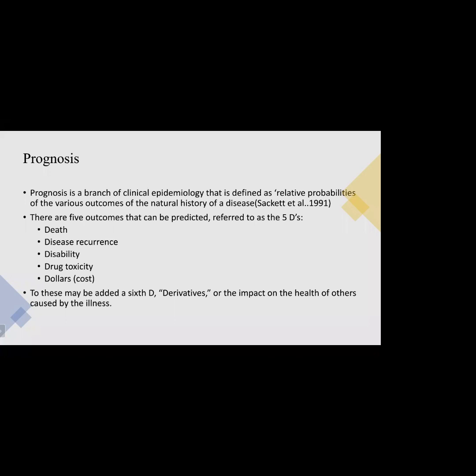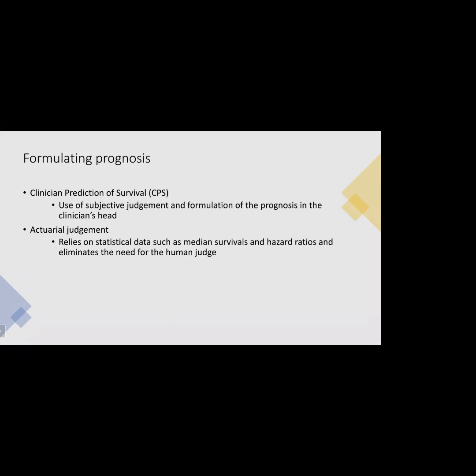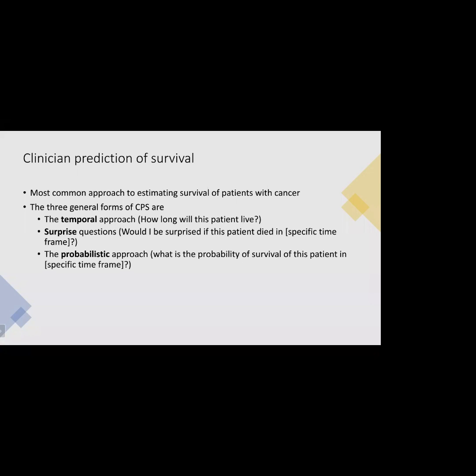In our subsequent discussion, we will explore how to formulate prognosis. Formulating prognosis can be done by subjective judgment — known as clinician prediction of survival — or by actuarial judgment, an objective method relying on statistical data such as median survivals and hazard ratios. The three general forms of clinician prediction of survival are the temporal approach (how long will this patient live?), the surprise question (would I be surprised if this patient died in a specific timeframe?), and the probabilistic approach (what is the probability of survival in a specific timeframe?).